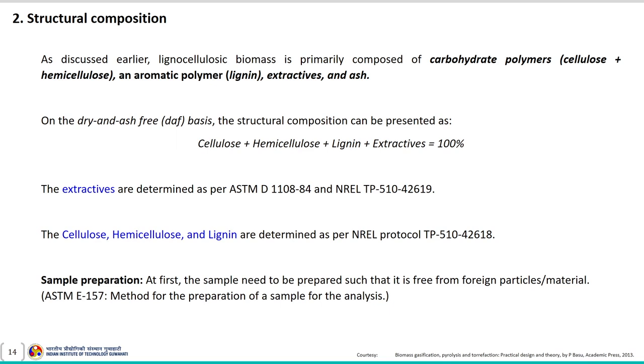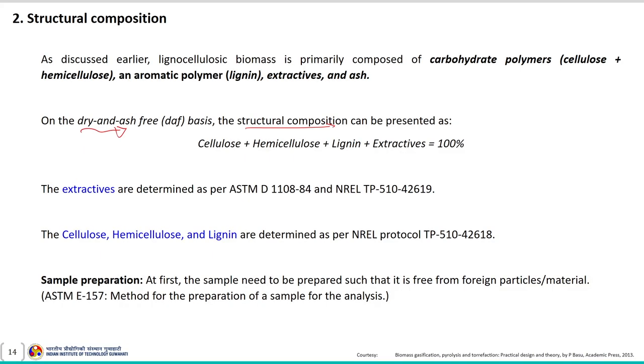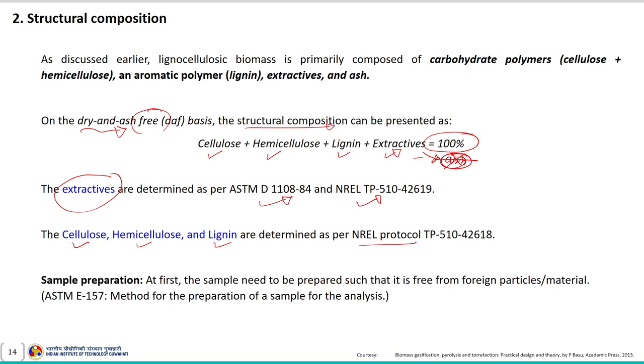Next is structural composition. Lignocellulosic biomass mainly constitutes extractives, cell wall components, and ash. The cell wall component includes carbohydrate polymers — cellulose and hemicellulose — and the aromatic polymer lignin. These collectively are known as the structural composition of biomass. On dry and ash-free basis, structural composition is presented as cellulose, hemicellulose, lignin plus extractives, except ash. Extractives are determined per ASTM standard method and NRL protocol, while cellulose, hemicellulose, and lignin are determined per NRL protocol.